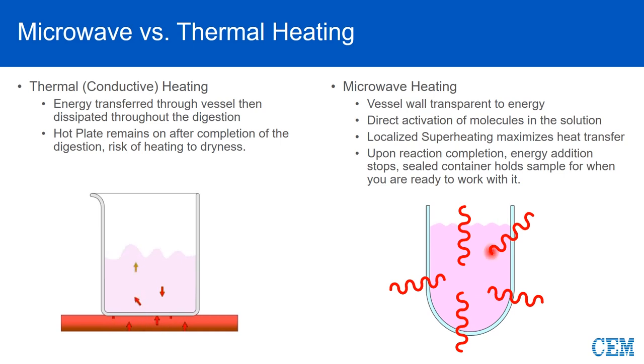This method of heating known as conduction requires a great deal of time. When the desired endpoint is reached, the chemist must remove the beaker from the heating plate to stop the reaction. Simply turning off the heating plate is not sufficient.